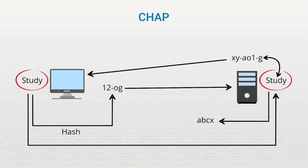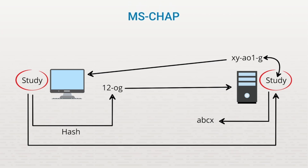It's important to realize that the hashed value sent is not an encrypted form of the password itself, but rather an encrypted form of the challenge. Even if someone intercepted this hashed value, the mathematical function performed makes it impossible to extract the original shared secret. Another authentication protocol is MSChap, or Microsoft Challenge Handshake Authentication Protocol. MSChap is a variation of CHAP that's supported on Microsoft computers.